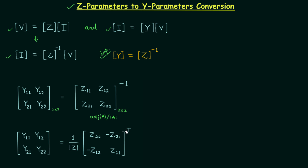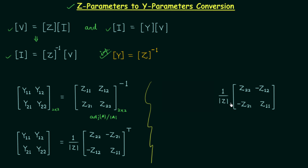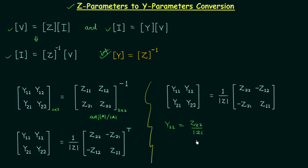Taking the transpose of the 2×2 cofactor matrix, Z22 and Z11 remain at the same positions, but minus Z21 and minus Z12 get interchanged. This matrix is then divided by the determinant of the impedance matrix, meaning all four elements are divided by the determinant. For the two matrices to be equal, corresponding elements must be equal, so Y11 equals Z22 divided by the determinant of the impedance matrix.